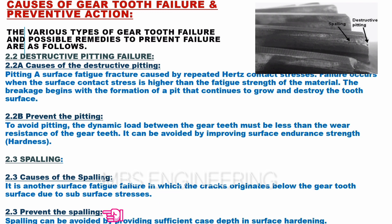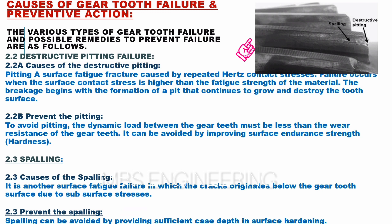Spalling can be avoided by providing sufficient case depth in surface hardening. Please refer to the gear tooth failure images for better understanding.